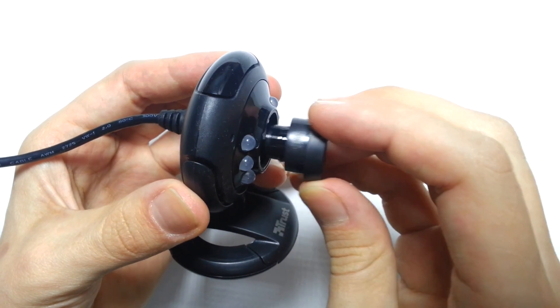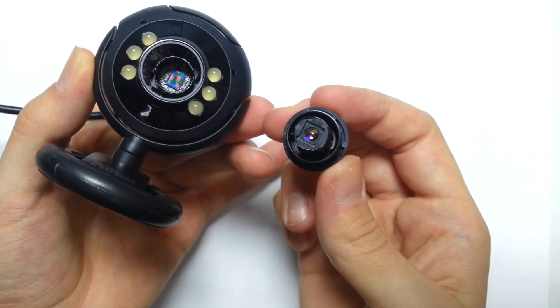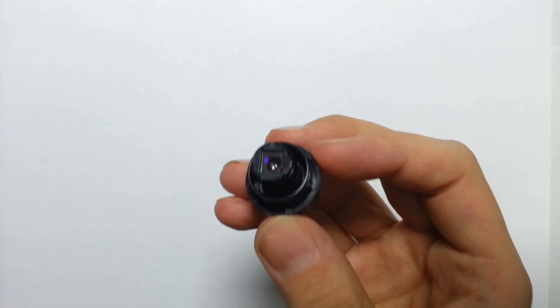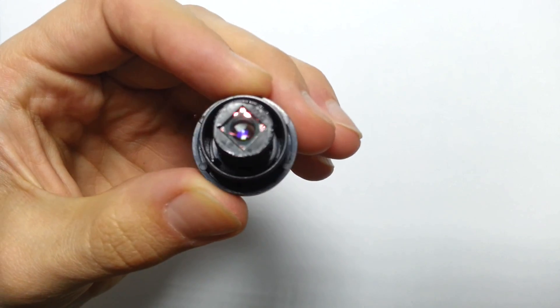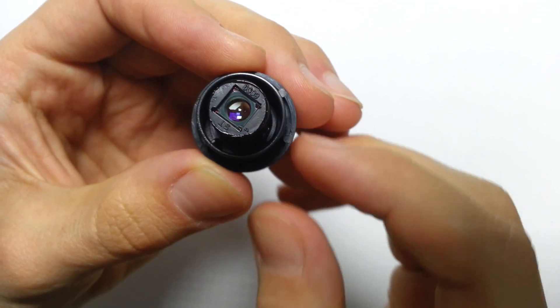Such filter doesn't allow infrared light hit the sensor. And if you remove such filter, the camera will start to see very interesting stuff that previously it would not be able to see.